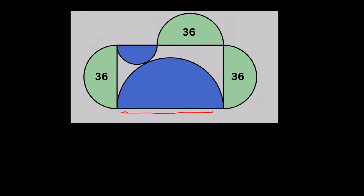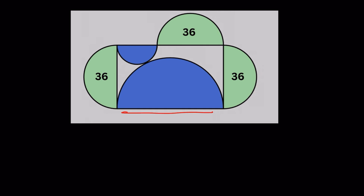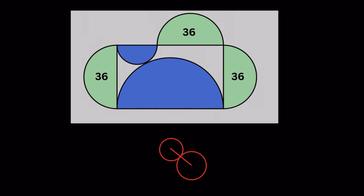Here we have a rectangle with three semi-circles on three of its sides and two semi-circles inside the rectangle. These two semi-circles are touching each other. We have to find the area of these two semi-circles with blue color. To solve this, there is a theory: when two circles externally touch each other, the line joining the centers of the two circles passes through a common point. Keeping this in mind, let's solve this.